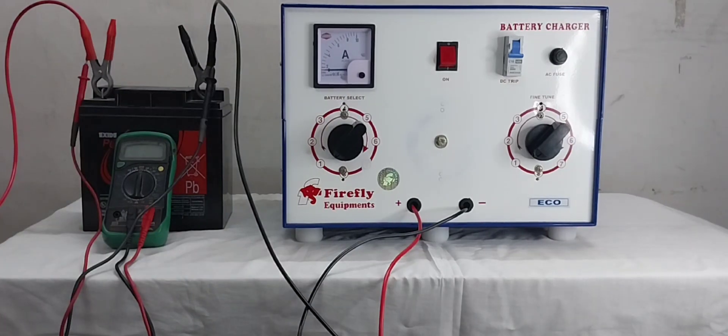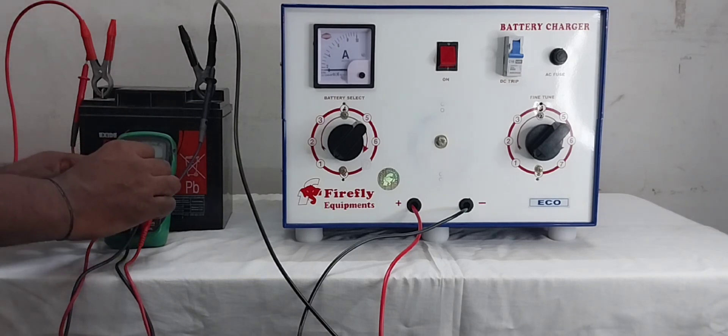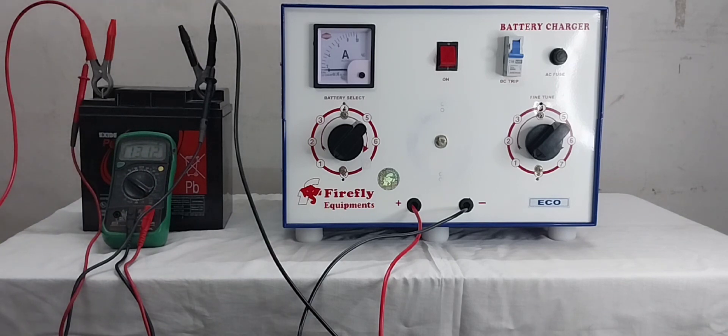First we are connecting one battery. Now the battery voltage we can set by multimeter. The beginning voltage approximate 13V DC.